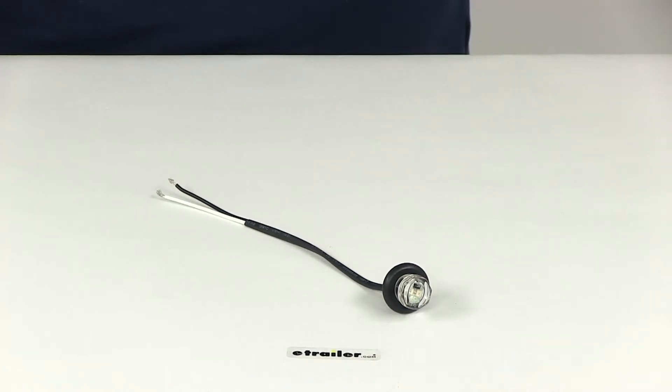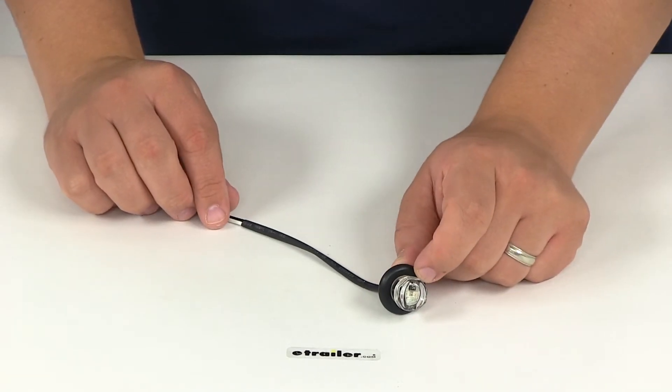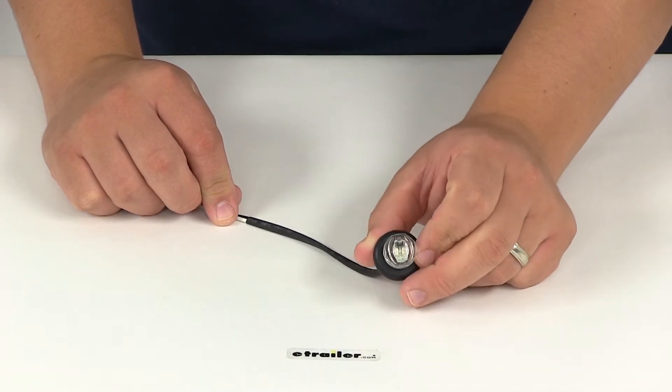Today we'll be reviewing part number MCL11CAKB. This is the Optronics UniLight Mini LED Side Marker Clearance Light. It comes with the grommet and is an amber light with a clear lens.